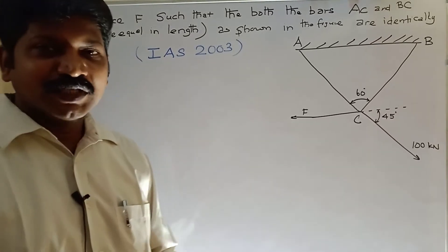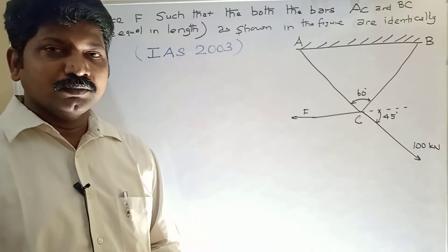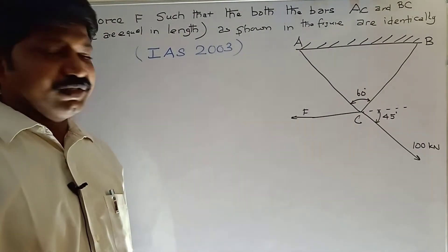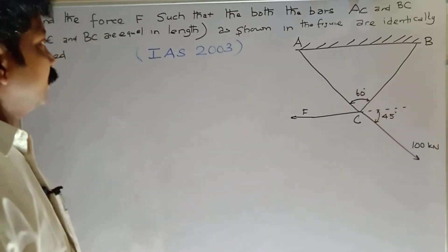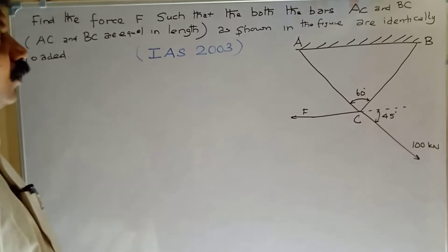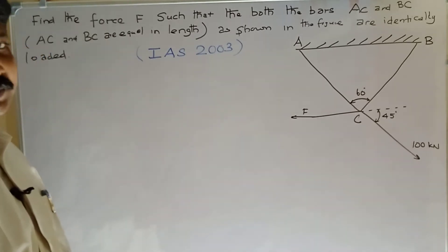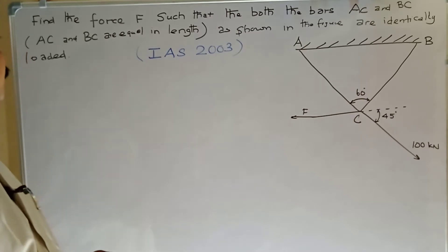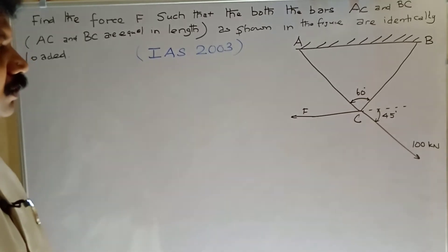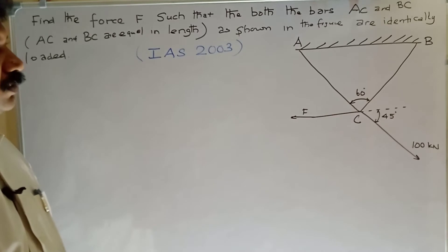Dear students, welcome. We are going to solve one more problem from IAS 2003, engineering mechanics topic. Find the force F such that both the bars AC and BC as shown in the figure are identically loaded.